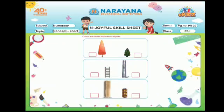In page number 22, we have to color the boxes with short objects. Look at the first object. There are two trees here. The second tree is the short tree. So, color the second tree.